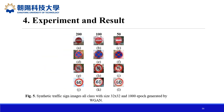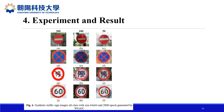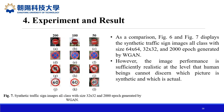In figure 5, we can see synthetic traffic sign images with size 32 and 1000 epochs. In figure 6, synthetic traffic sign images of size 64 are shown using 2000 epochs. In figure 7, synthetic traffic sign images of size 32×32 with 2000 epochs are presented. As seen in figures 6 and 7, the synthetic traffic sign images generated by WGAN with size 64 and 32 at 2000 epochs show sufficiently realistic performance at a level where human beings cannot discern which features are synthetic and which are actual.